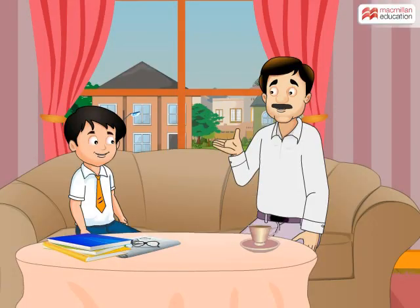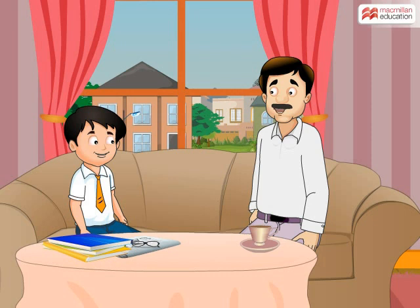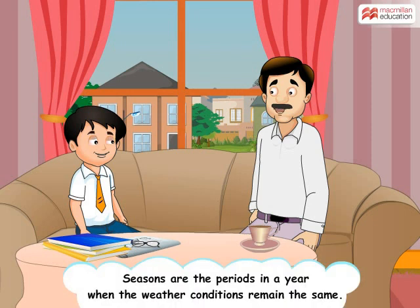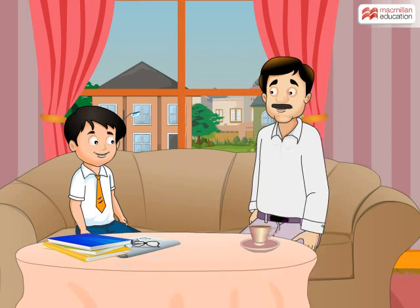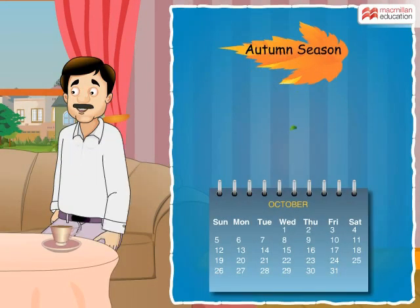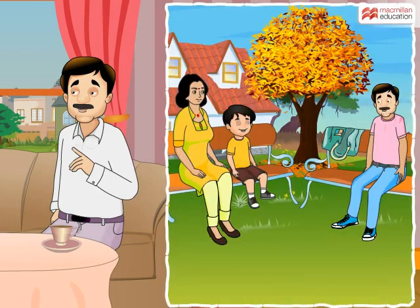You see, Ravi, the whole year is divided into different periods during which the weather conditions remain the same. These periods in a year when the weather conditions remain the same are called seasons. Do you know what season comes after monsoon season? We have autumn season after monsoon, then winter season.